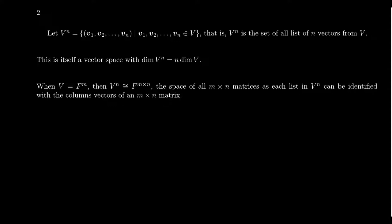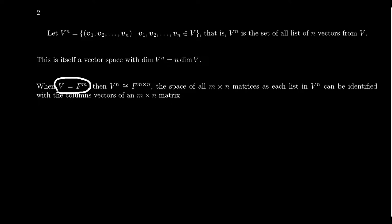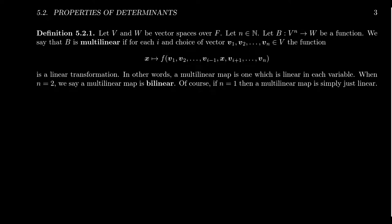In terms of addition on V^N, if you had two tuples (V1, V2, ..., VN) and (W1, W2, ..., WN), you add them component-wise. In terms of scalar multiplication, you distribute the scalar onto everything. If we take V to be the column vectors F^M, then V^N is going to be the vector space F^(M×N) — the space of all M-by-N matrices. The reason we introduced that notation is that's how one describes what we call a multilinear map.